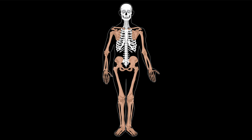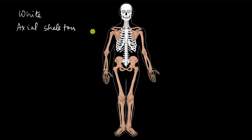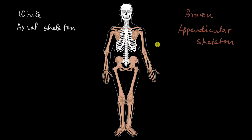The part you see in white is called the axial skeleton. Axial stands for axis, so this is the central axis of the body, and the axial skeleton is present very close to the axis — hence the name. The brown part, the rest of the skeleton, all these parts are called the appendicular skeleton. Why appendicular? Because our hands and legs are appendages — things that are attached to the main body.